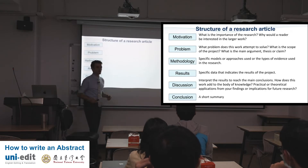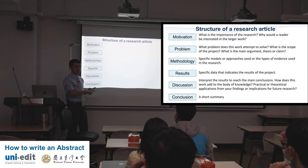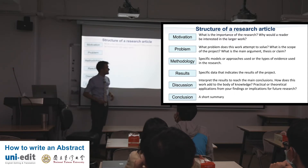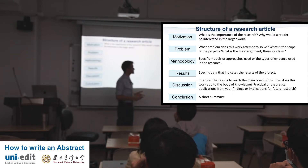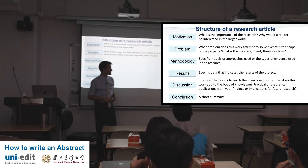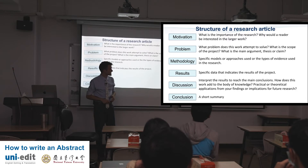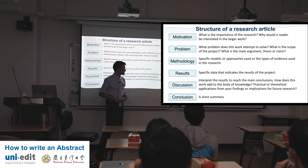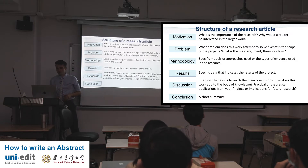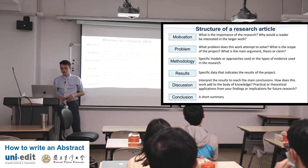The structure of your research paper maps to the abstract. Motivation and problem — this is your introduction section and literature review, this is background research. Motivation: what is the importance of your research? Why would the reader be interested in the larger work? Problem: what problem does this work attempt to solve? What is the scope of the project? What is the main argument, thesis, or claim? Specific models or approaches used — the types of evidence used in the research. Specific data that indicates the results of the project. Discussion: interpret the results to reach the main conclusions. How does this work add to the body of knowledge? Practical or theoretical applications from your findings or implications for future research.